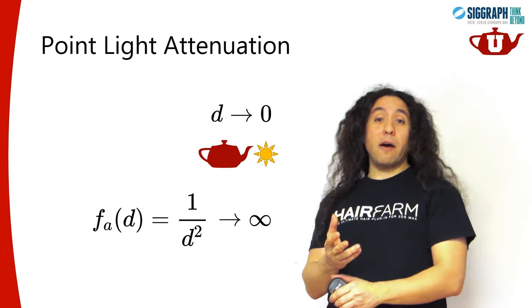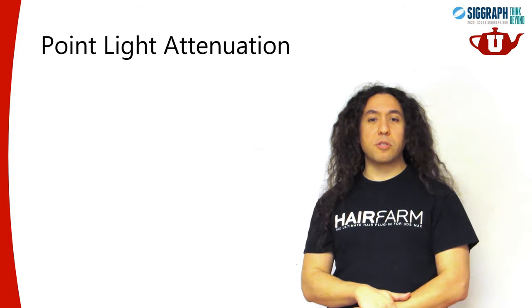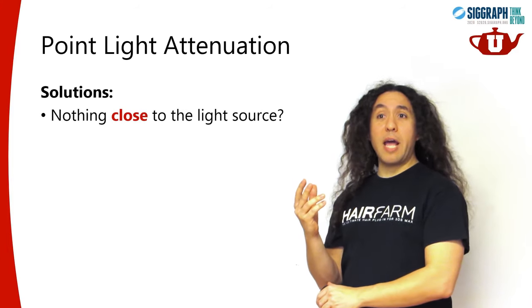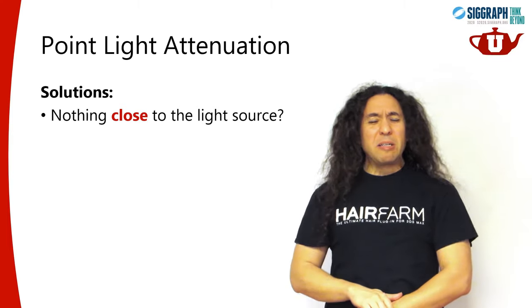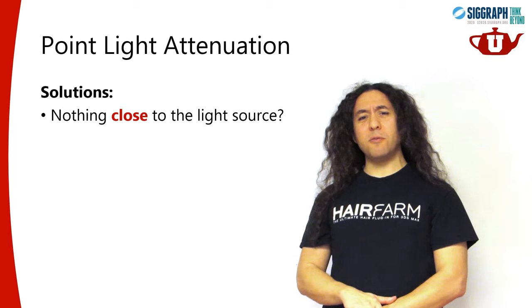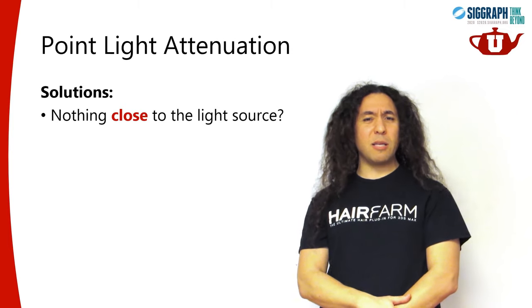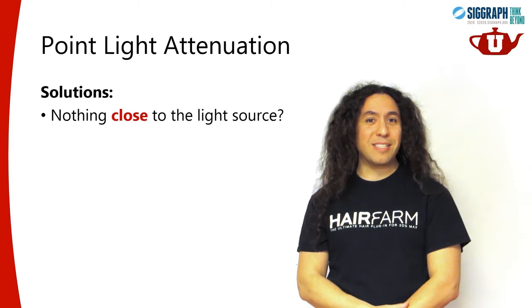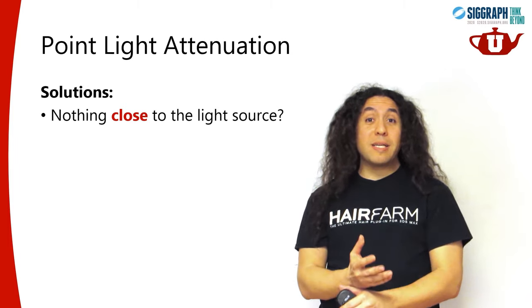This has been around for quite some time, and people came up with all sorts of solutions. For example, one solution is that we don't put anything close to a light source. But what is really close to a light source? It kind of depends on the scale of the scene - what's the limit of closeness? It's sort of not very well defined.